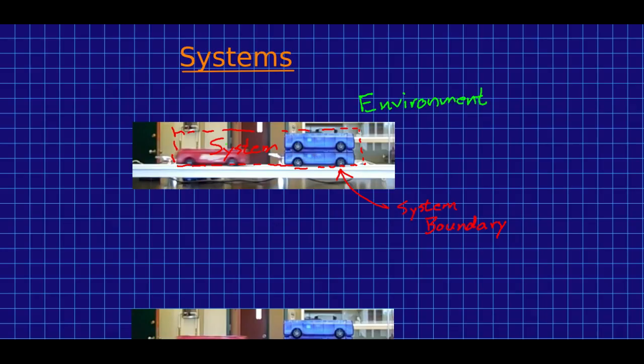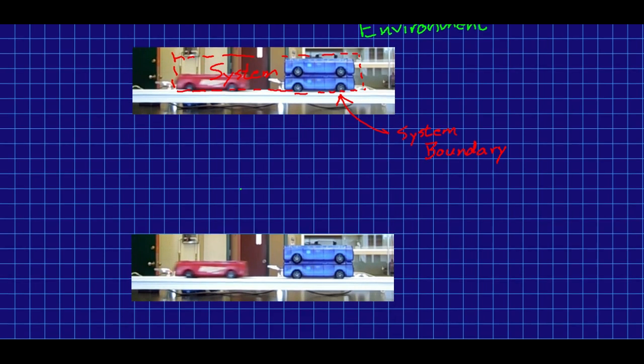Now, our choice of system is very much a choice, and we may make that choice in different ways. With experience, you sometimes realize that there are choices of systems that make solving a problem easier. But there's no choice of system that is either right or wrong. There are simply convenient choices and less convenient choices.